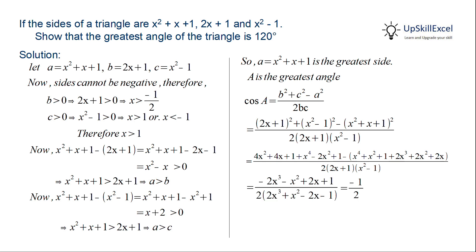We get that it is equal to minus half, and we know that cosine A will be minus half only when A is equal to 120 degrees.